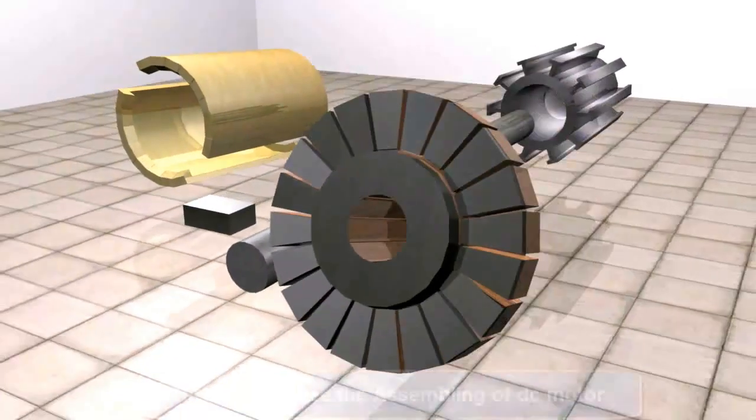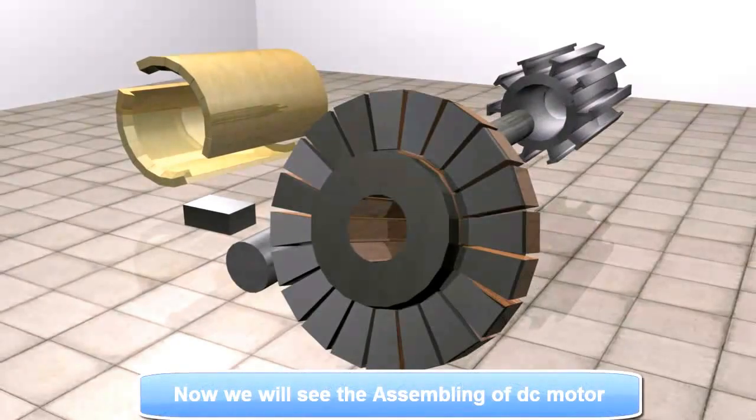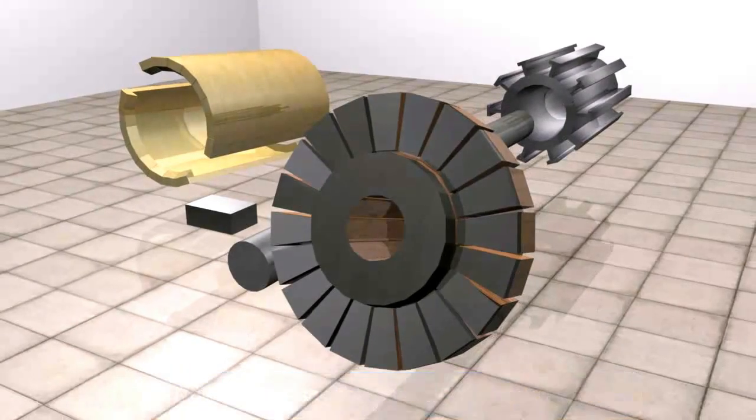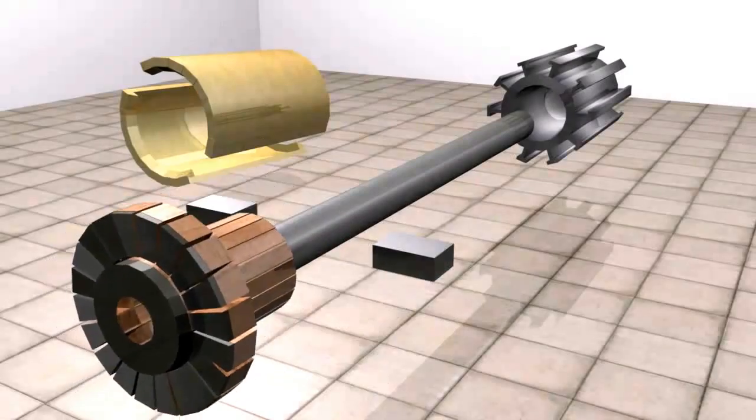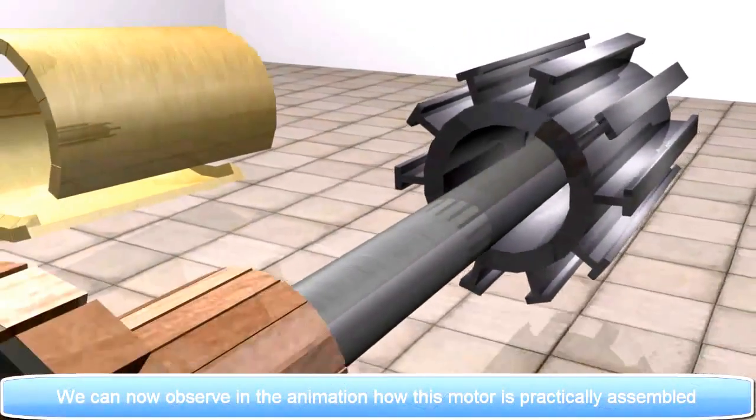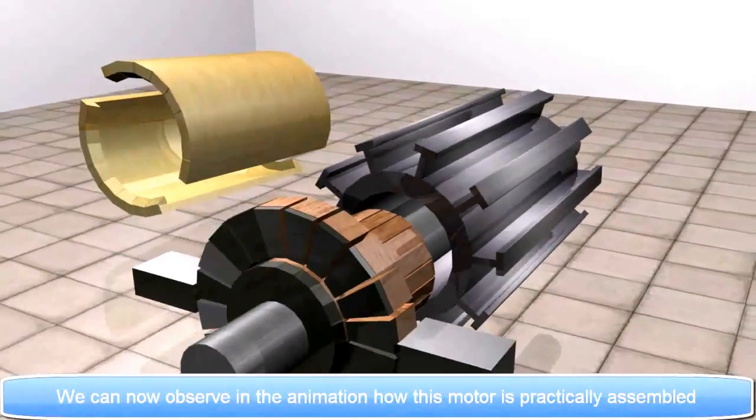Now we will see the assembling of DC motor. We can now observe in the animation how this motor is practically assembled.